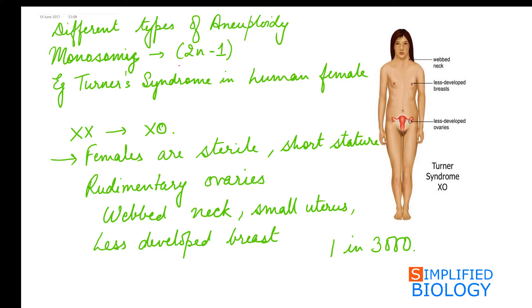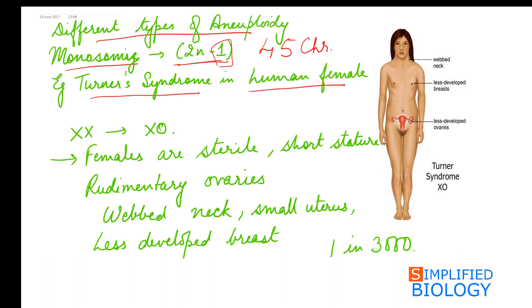The different types of aneuploidy: first is monosomy, in which the chromosome number is 2n minus 1 — meaning instead of 46 chromosomes there are 45, so one chromosome is without its homologous partner. The best example of monosomy is Turner syndrome in human females, where instead of 2 X chromosomes, only a single X chromosome is present.